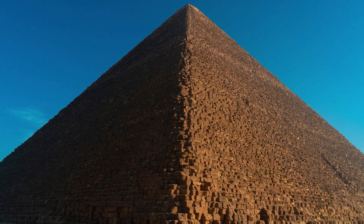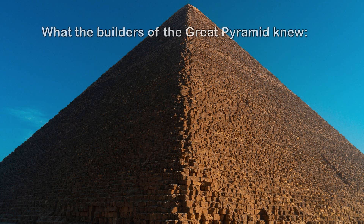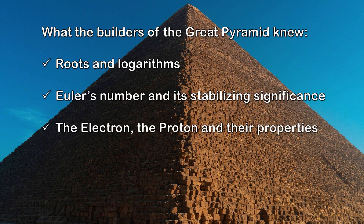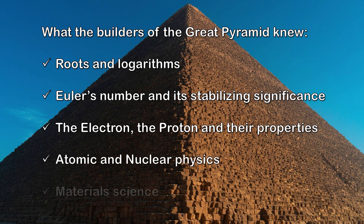The Great Pyramid is the symbol. In conclusion, we can affirm that the builders of the Great Pyramid knew roots and logarithms, Euler's number and its stabilizing significance, the electron, the proton and their properties — and consequently, atomic and nuclear physics and material science.